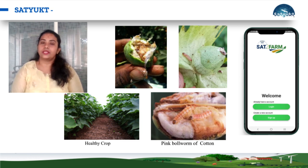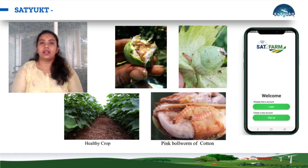If one notices this pest infection in the plant, they can spray emamectin benzoate at 5% SG at 75 to 85 grams per acre. One should also always practice crop rotation in cotton fields.